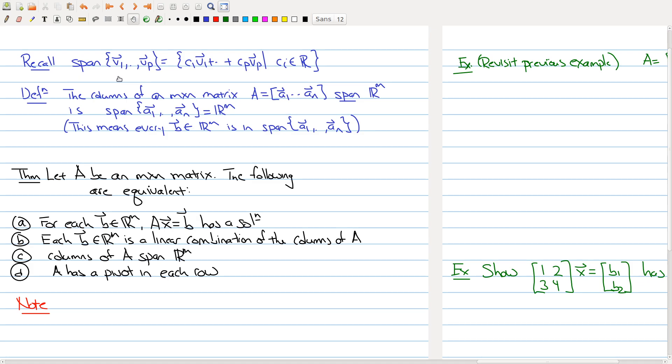Last class we talked about the span of a particular set of vectors. The span of a collection of vectors is all linear combinations of those vectors. So you fix a bunch of vectors, in this case p vectors, then you form all linear combinations, dump them into a set, and that's called the span of those vectors.